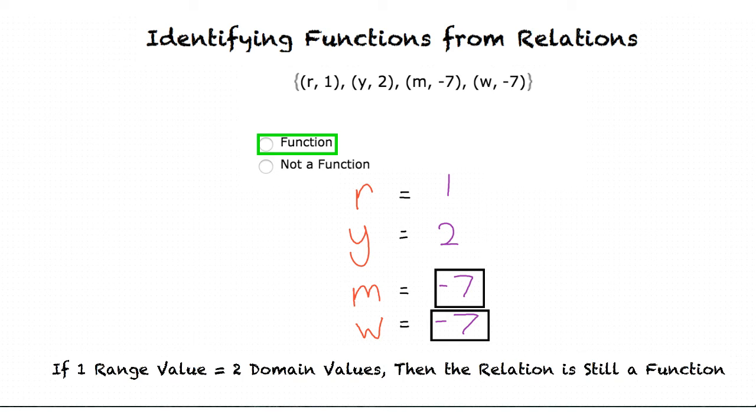I think I'm starting to understand, but let me summarize just to make sure. In order for a relation to be considered a function, the values in the domain can only be attached to one value in the range. If a value in the domain is attached to more than one value in the range, the relation is not a function.